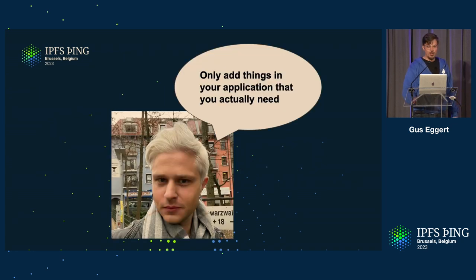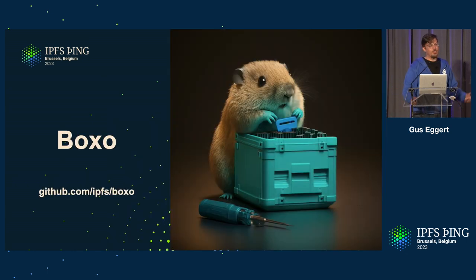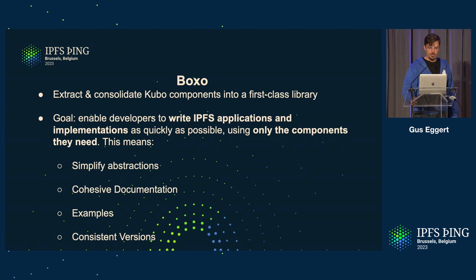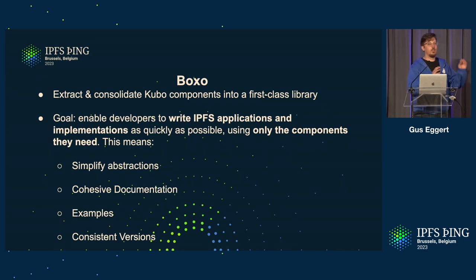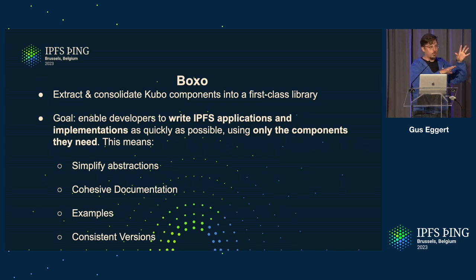That's where Boxo comes in. Boxo is basically extracting the components from Kubo and from these different repositories and consolidating them into a single library. Our goal is to help you write applications and implementations as quickly as you can without having to deal with all that stuff. Part of this is refactoring and simplifying abstractions, adding documentation and examples, and since it's all in one place, having a snapshot of versions that all work together — so you don't have to go through dependency hell figuring out which versions work with what.